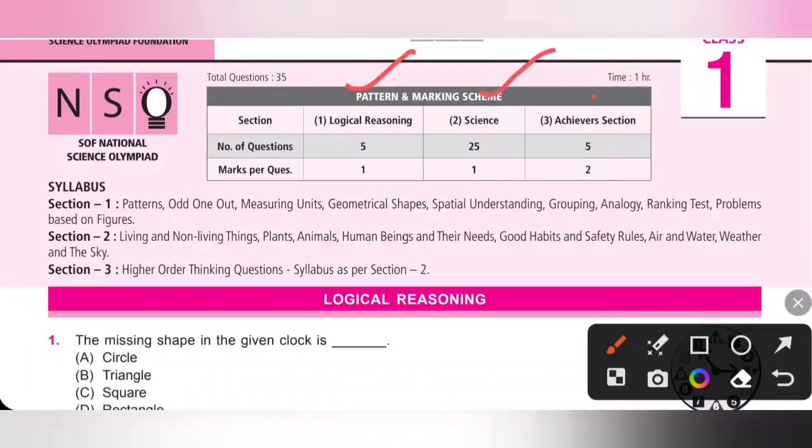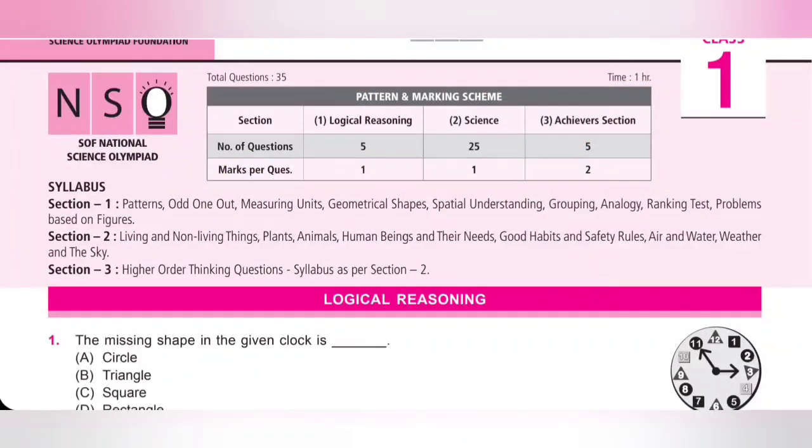Logical Reasoning, Science, and then Achiever section. In Logical Reasoning, questions will be from Patterns, Odd One Out, Measuring Units, Geometrical Shapes, Spatial Understanding, Grouping, Analogy, Ranking Test, and Problems Based on Figures.